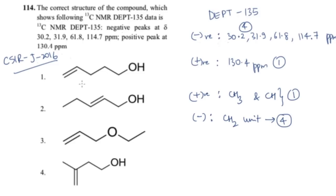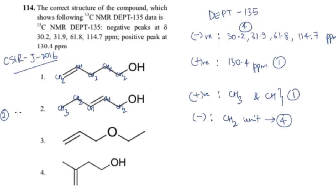Looking at option one, you have four CH2 units and one CH unit — that gives four negative peaks and one positive peak, which matches our data. Let's check option two: it has CH3, two CH2 units, and two CH units — that gives two negative peaks and three positive peaks. That doesn't match.